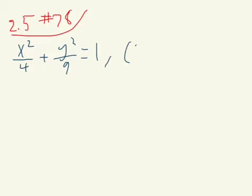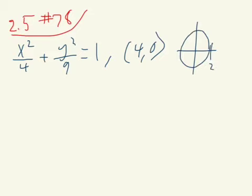So you have an ellipse at this point. You want to find when, or what are the equations of the two tangent lines that go through 4, 0. Let's make a rough sketch of this. Hits there at 2, hits there at negative 2, hits here at 3, hits here at negative 3.